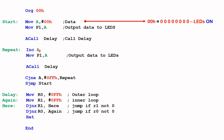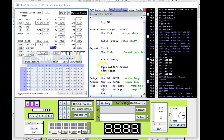We increment the contents of Register A, output that to Port 1, and you should see the LEDs start to count down. Hold it for a while, then ask the question: is it FF hex? If not, go back, increment it, and repeat the whole process — you'll see the LEDs count down until the contents of A equals FF hex, and then it repeats the whole process again.